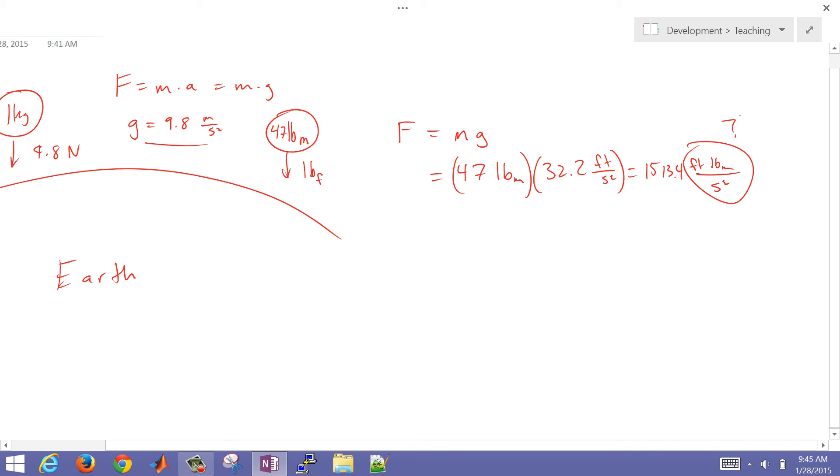We want to put that into pound force units. The way we do that is we divide by GC, which is 32.2 pound mass feet per second squared over pound force.